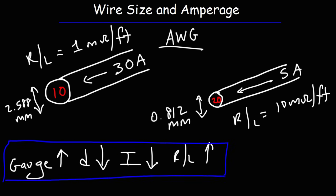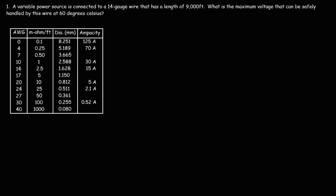To summarize: as the gauge number increases, the diameter size decreases, the amount of current it can handle decreases, but the resistance increases. Here we have a table that lists the wire gauge, the resistance per unit length, the diameter size, and the ampacity — the maximum current the wire can handle at 60 degrees Celsius.